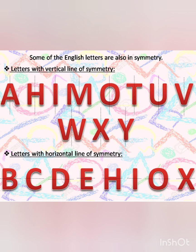There are some English letters which are in symmetry. Let me give you the examples of letters with vertical line of symmetry. Here is the list. I hope you all can observe the line of symmetry in the letters A, H, I, M, O, T, U, V, W, X, and Y.